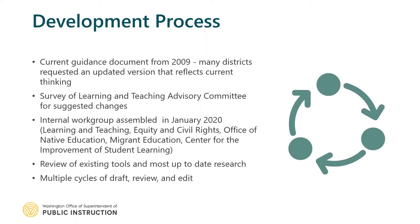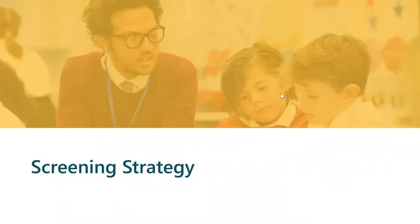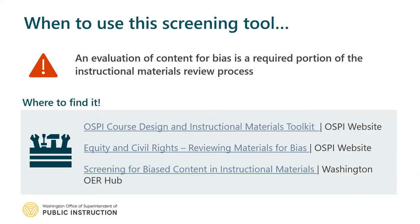I'm going to pass it back to Barbara, who will walk you through the different components of the tool. I'll talk a little bit about the strategy for actually using this screening tool with your district as you're reviewing instructional materials. An evaluation of content for bias is a required portion of your district's instructional material selection and adoption process. This screening tool was designed assuming that you or your review team is conducting a bias review as part of that larger process, though we hope that the criteria presented here also help guide selection of supplemental or intervention resources, or the review of your existing instructional materials. Before we launch into more details, let me take a moment to let you know where to find it.